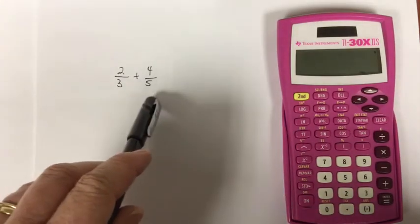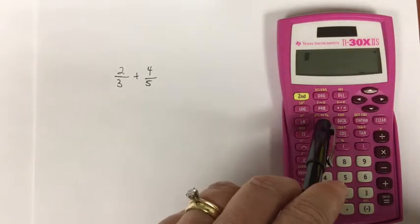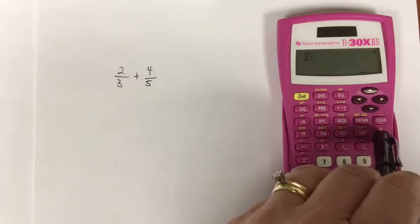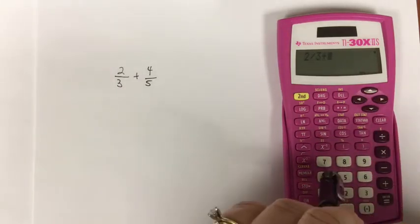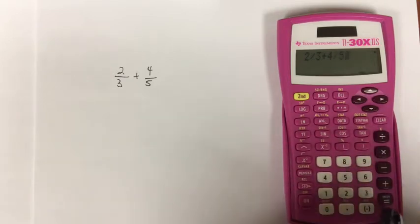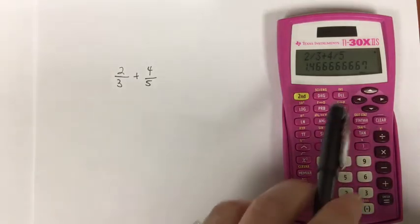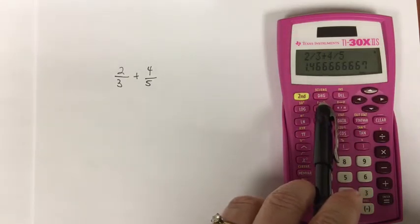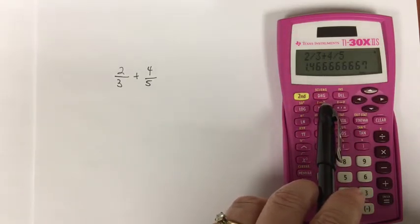Let's add 2 thirds plus 4 fifths, but instead of using the fraction key, I'm going to use the divide key. 2 divided by 3 plus 4 divided by 5 equals, and of course it gives me the answer in decimal form.